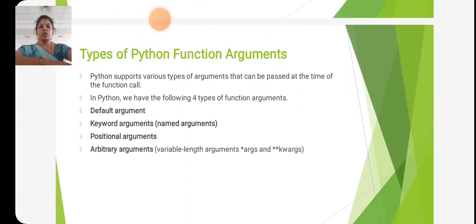Types of function arguments. It has four types of function arguments: default arguments, keyword arguments, positional arguments, and arbitrary arguments.